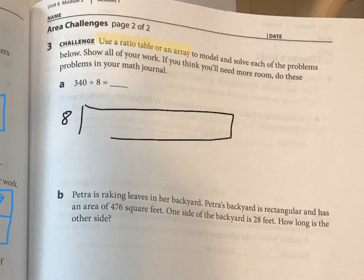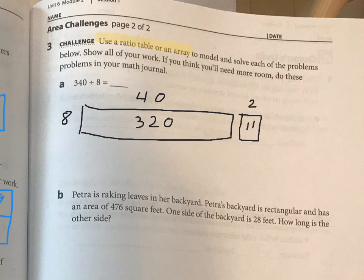As I'm doing this, I'm thinking how can I get close to 340? I know 8 times 4 is 32, so I'm going to go 8 times 40 and I'm already at 320. I have 20 more to go, but I can't get 20 more. The best I'm going to be able to do is 16.